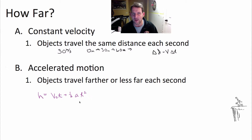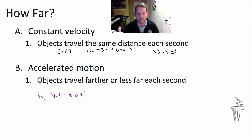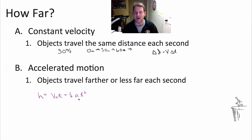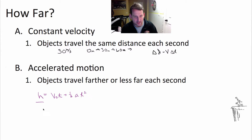This equation works great for dropped balls or for throwing things up. It also works horizontally, although here I've chosen the letter H. But remember, a height is just a distance — this could easily change to the letter D if you were moving sideways. This equation works great for any constant acceleration motion. This is the height above or below the release point.